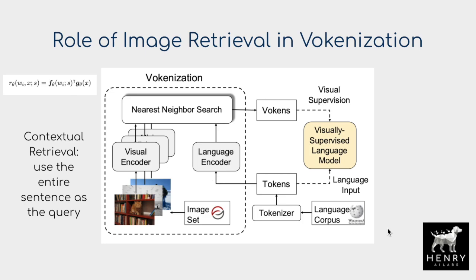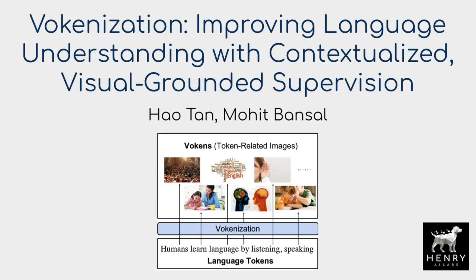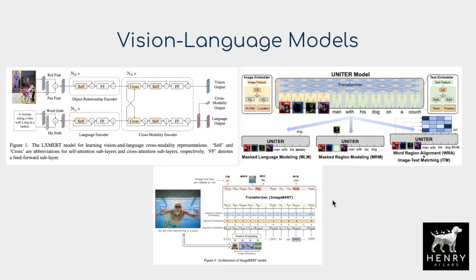Another important aspect is that you don't have to change the architecture of existing language models — you can take BERT, GPT, or BART and add this visual supervision. This differs from papers like ImageBERT or ViLBERT with their cross-modal attention architectures. Vulcanization doesn't take image tokens or image vector representations as input; it uses them as a supervised learning loss to improve the intermediate vector representations of the language tokens.